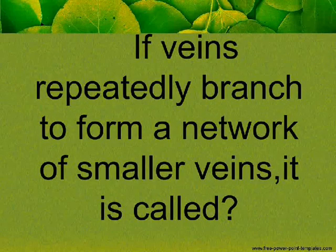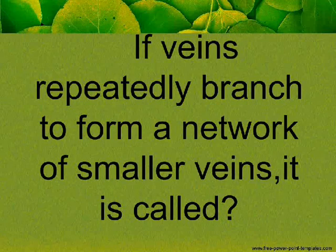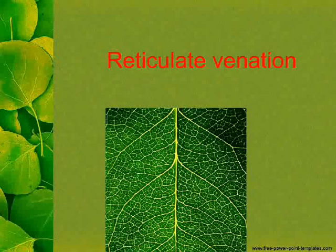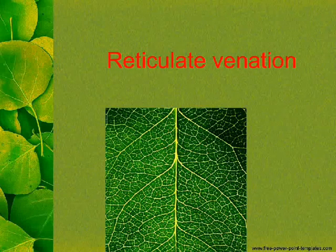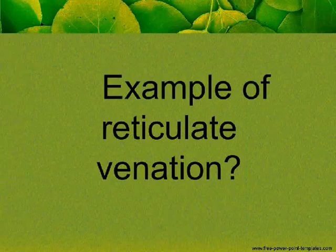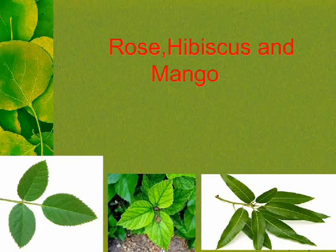If veins repeatedly branch to form a network of smaller veins, it is called Reticulate Venation. Examples of Reticulate Venation include rose, hibiscus, and mango.